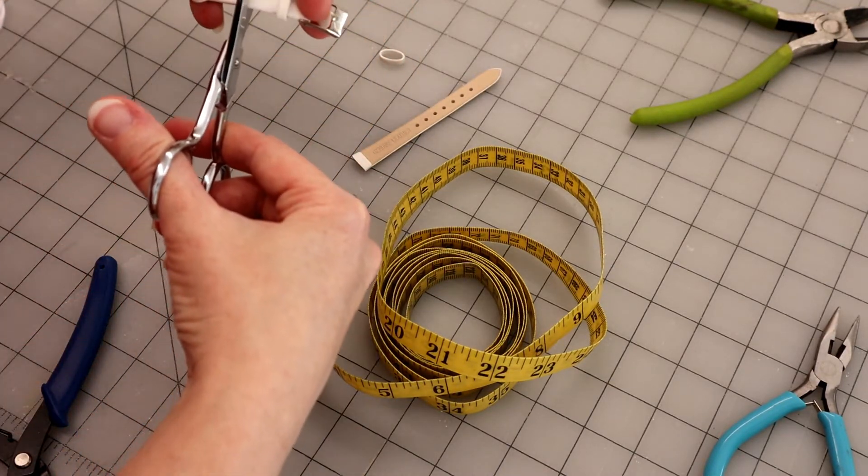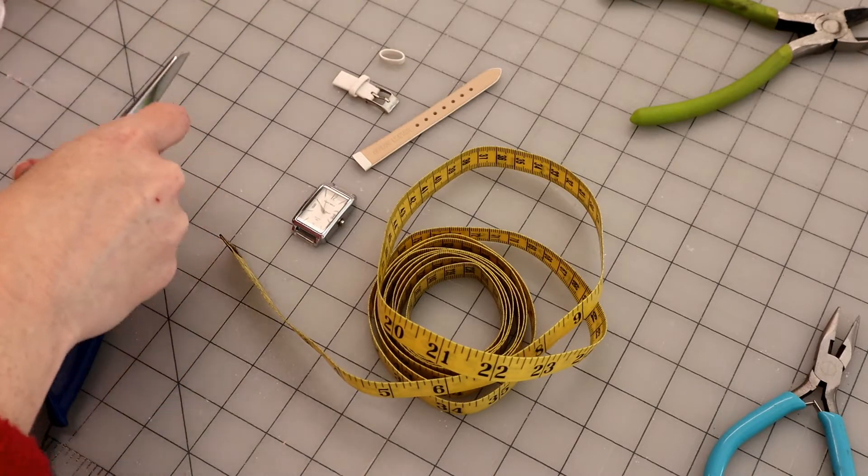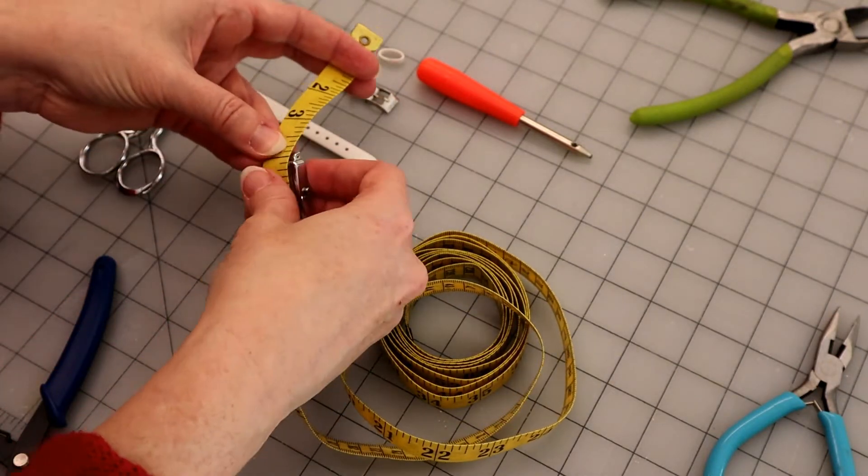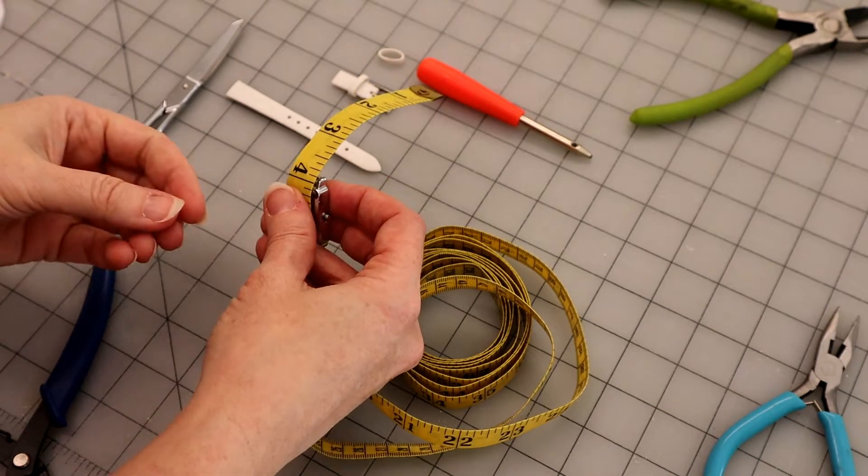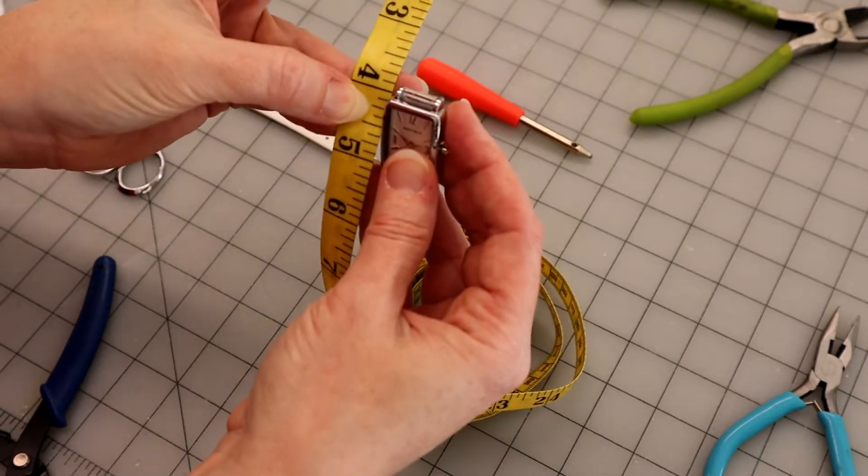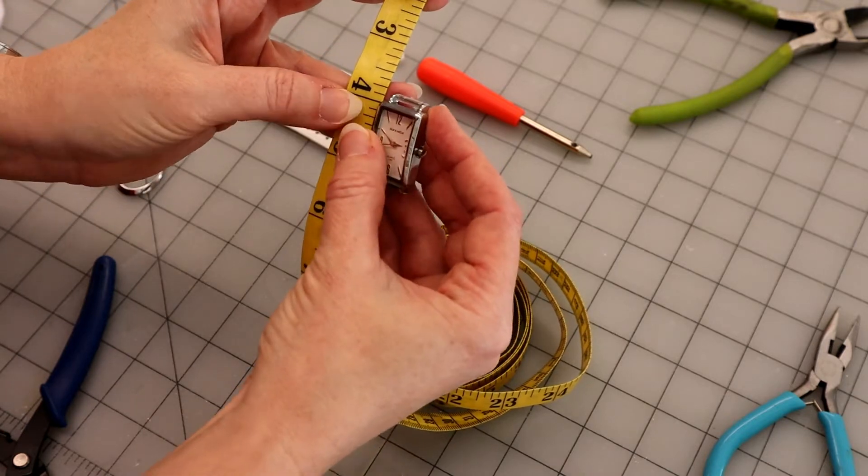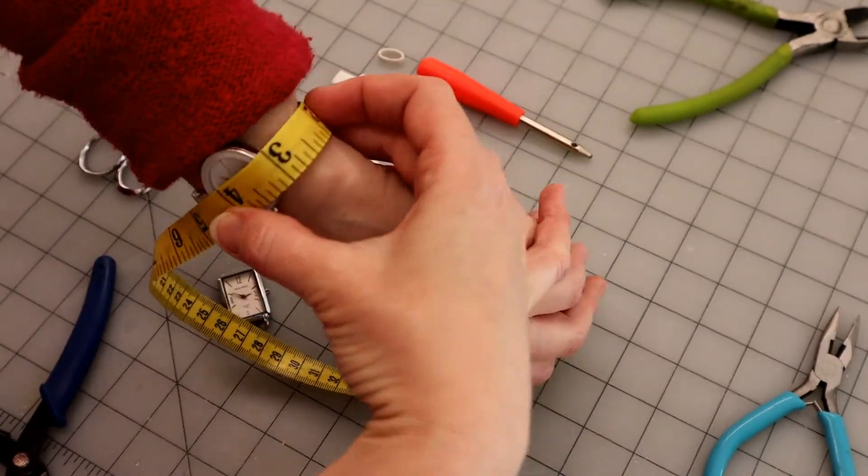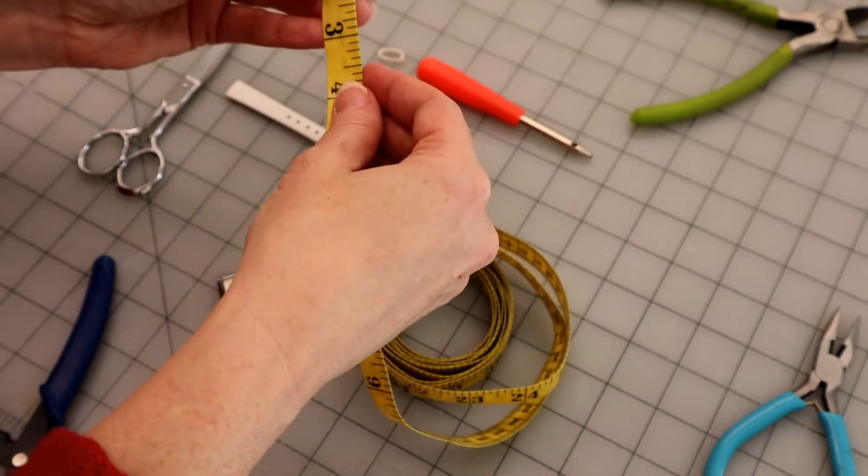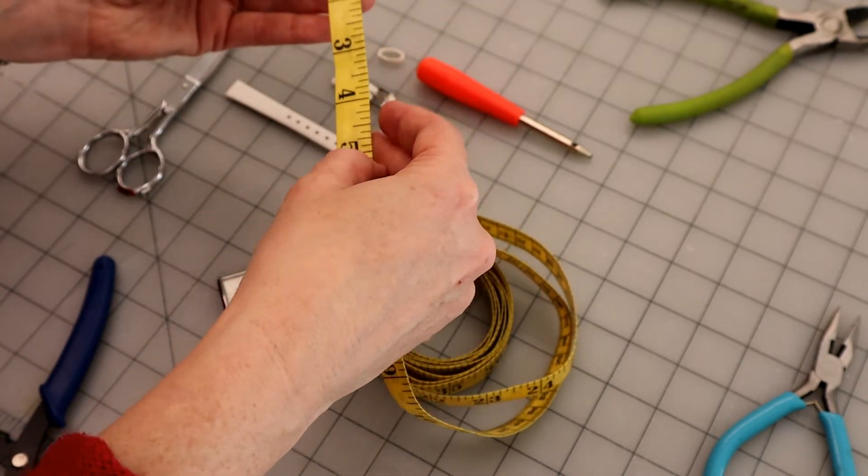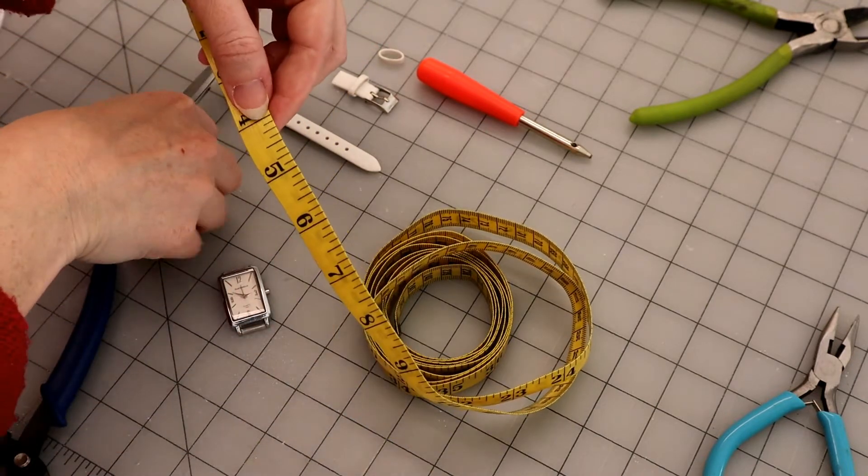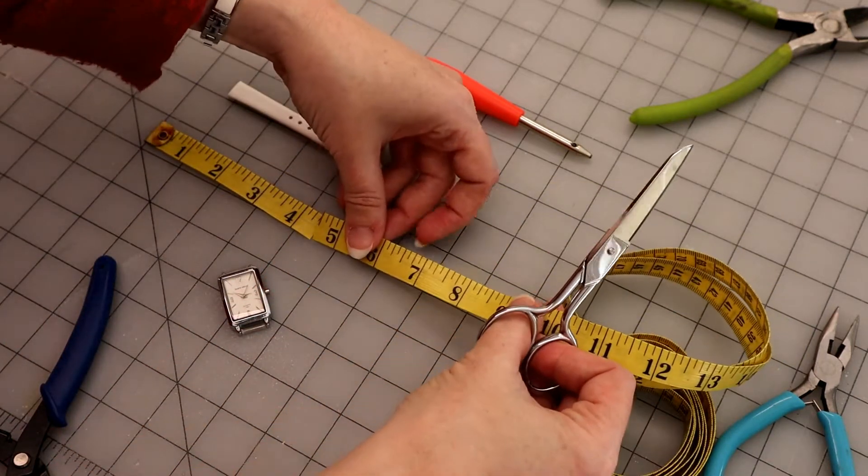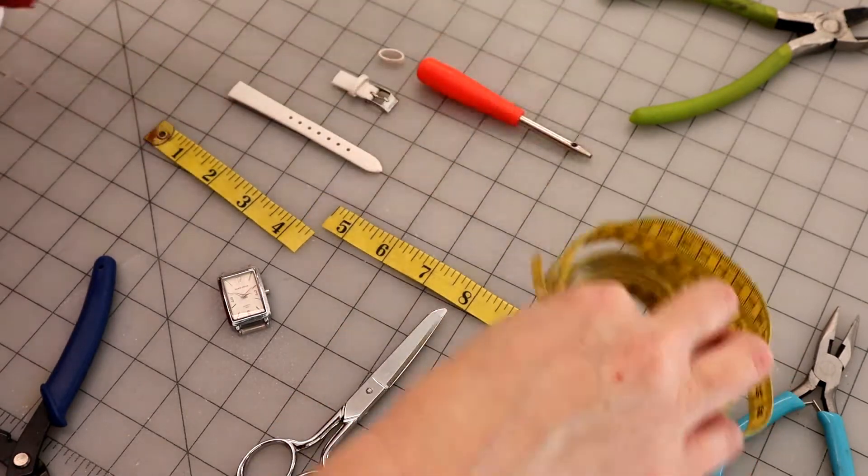So here I'm just comparing the width of the measuring tape to the width of the bar on the case that it's going to be attached to, so I can see how much to trim it. When you make your measuring tape watch, obviously you can use any color measuring tape you want, and you can also use the inches side or the centimeter side. Sometimes you just want more numbers and more lines going on, and then you would probably want the centimeter side for that. I'm just going to cut just a general length here.